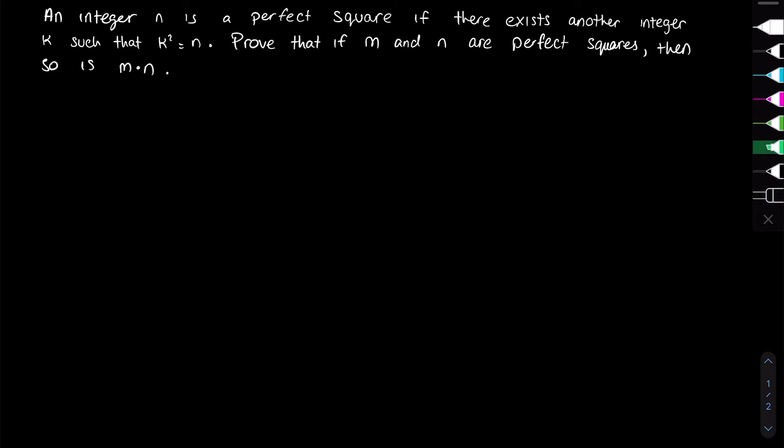Let's assign another name for m times n so we don't have to write it every time in our proof. Let z equal m times n. Now let's start proving it.